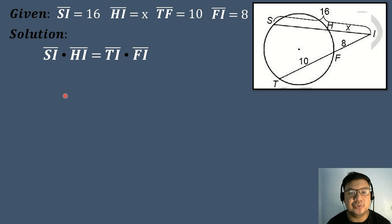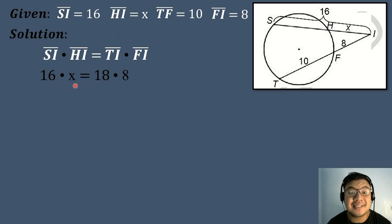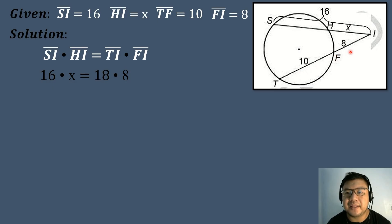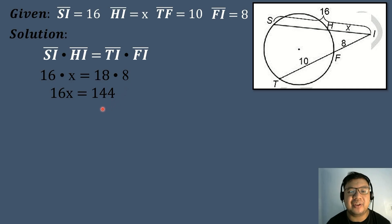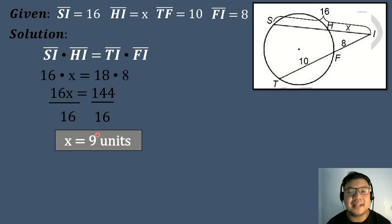We substitute the values: 16 times X equals segment TI times 8. The value of segment TI is 10 plus 8, which equals 18. So 16X equals 18 times 8, which equals 144. We divide both sides by 16: 144 divided by 16 equals 9. So the measure of segment HI, the external part of secant segment SI, is equal to 9 units.